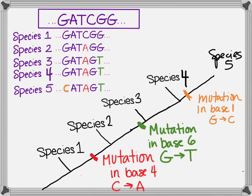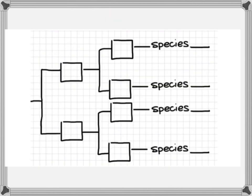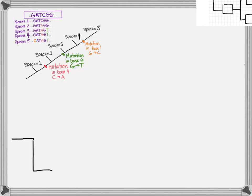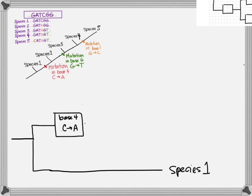Now the question is, can we take this information and put it on a cladogram that looks more like this? Of course we can. The first thing we want to look for is a species that has no mutations — and as we established before, that'd be species 1. No changes to their DNA. Which species has a single mutation? That would be species 2. Species 2 has a base 4 change from a C to an A, and that's the only mutation species 2 has. So the line for species 2 is only going to go through that box.